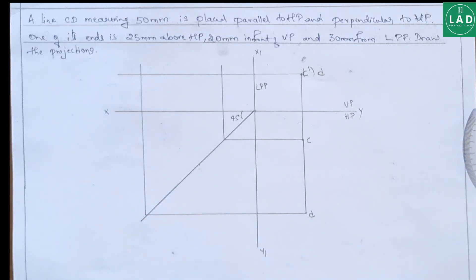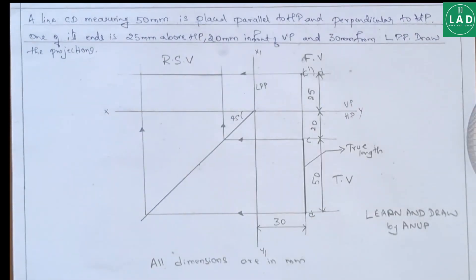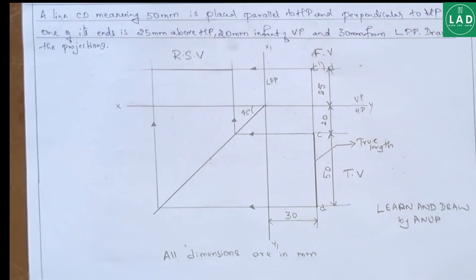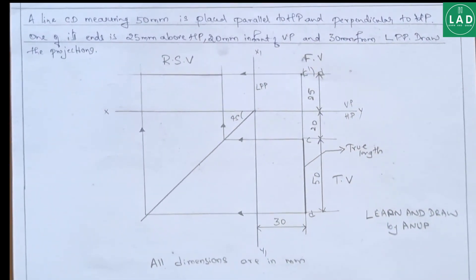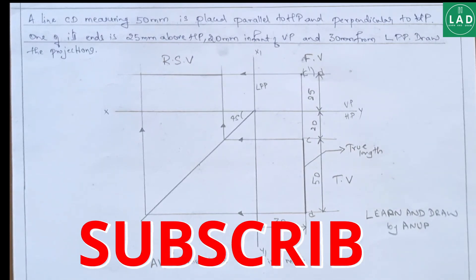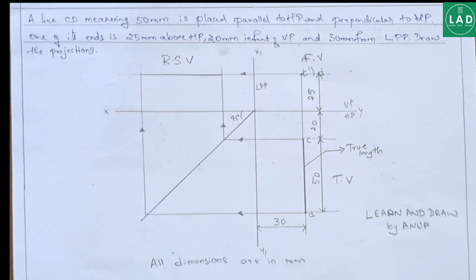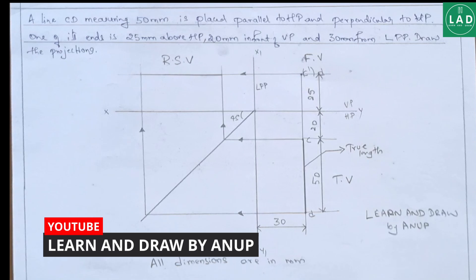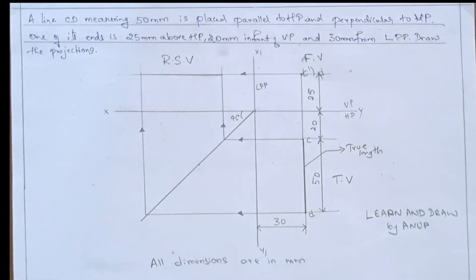The last step is to darken the lines and name the dimensions. After darkening the lines, naming the dimensions and the views, this completes the problem. Thank you for watching the video. For more videos on engineering drawing, subscribe to my channel, Learn and Draw by Anup.